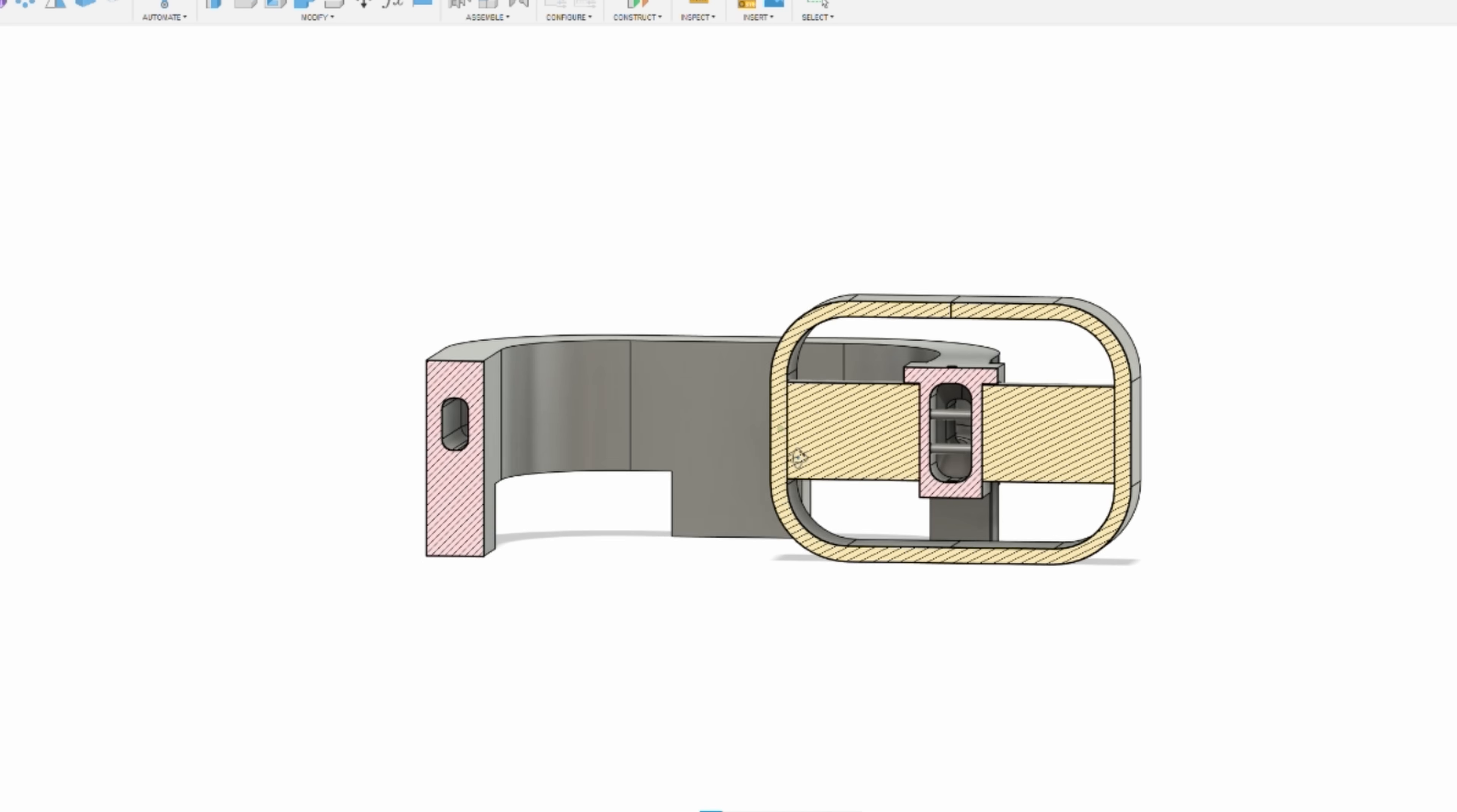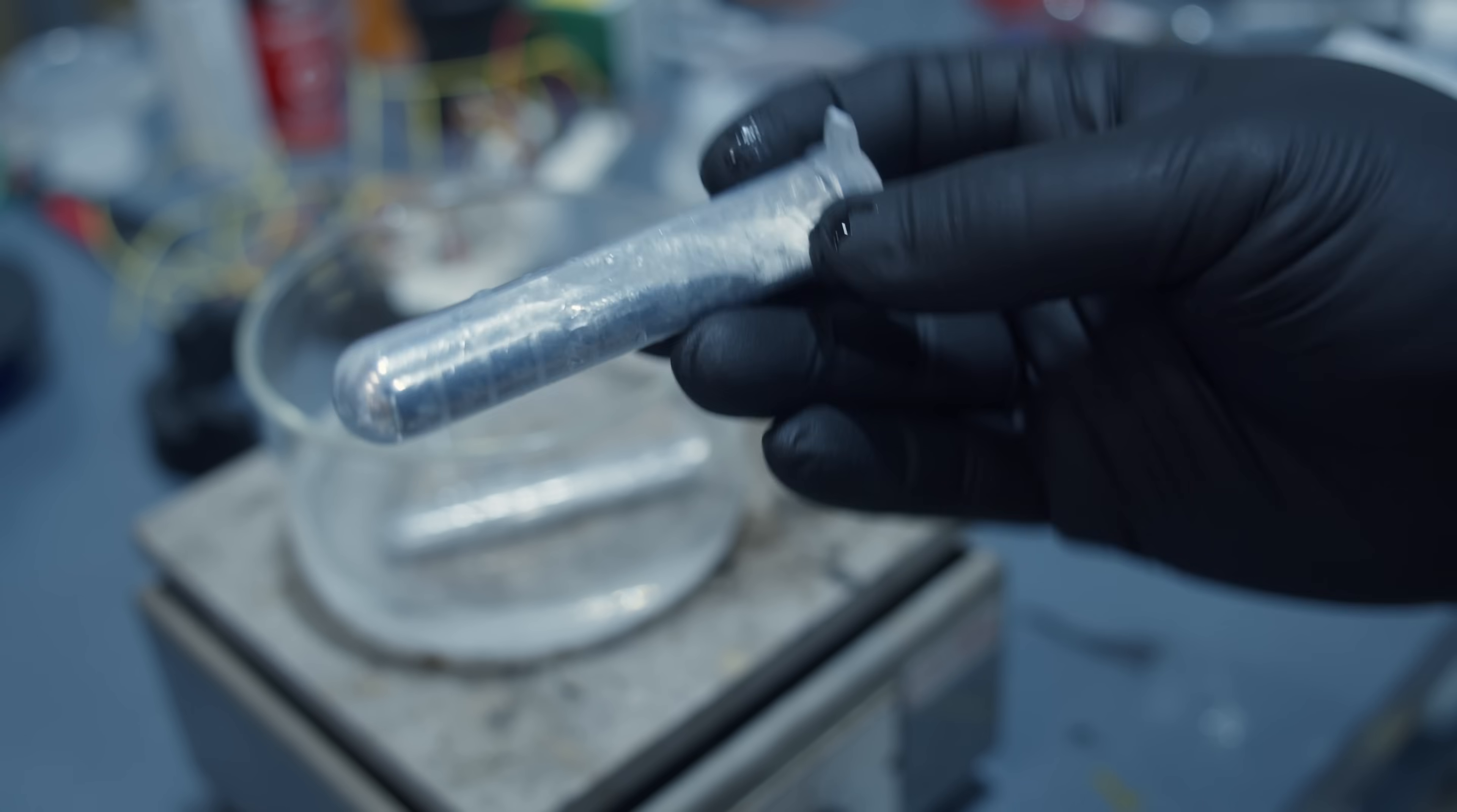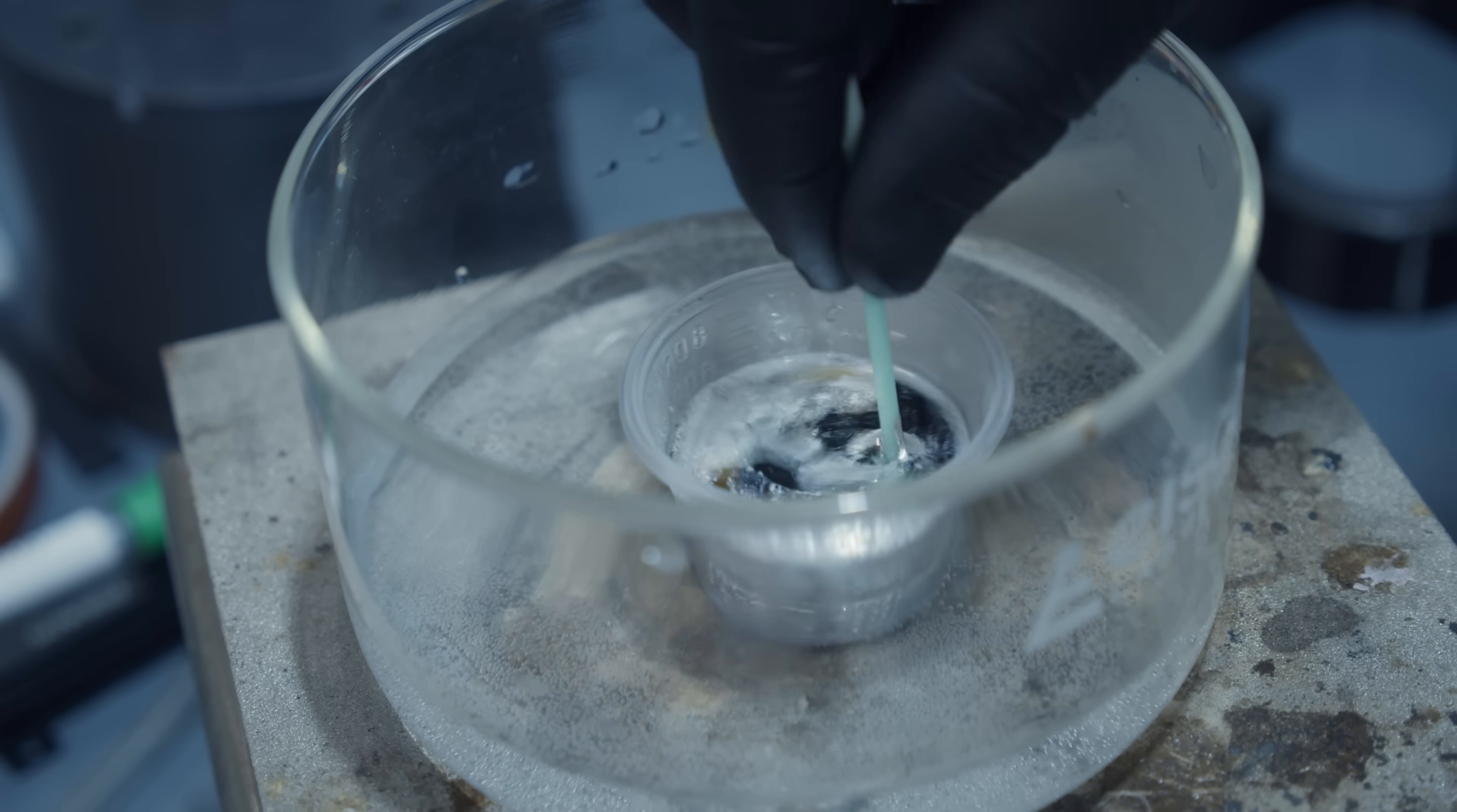This big device means it needs a lot of liquid metal. Way more than I had purchased for the field emission project. It's expensive to buy this pre-made, but it is actually quite easy to make galinstan. I made myself a big batch by combining gallium, indium, and tin together in a hot water bath. A few minutes later, and I had a few hundred grams of galinstan ready to go.